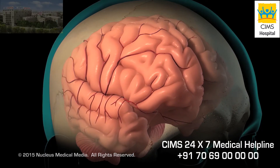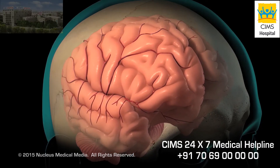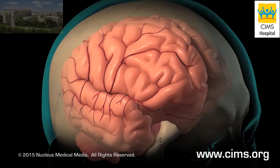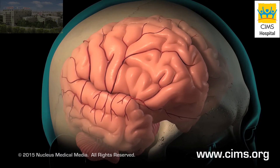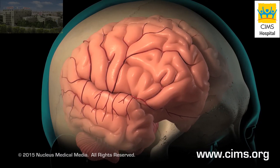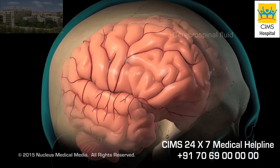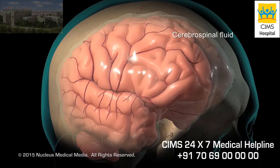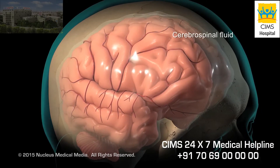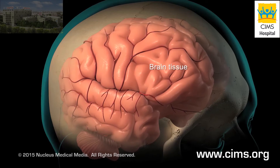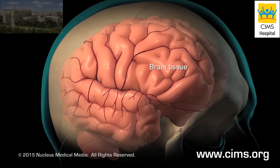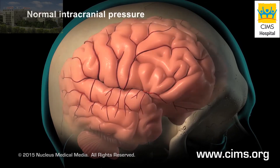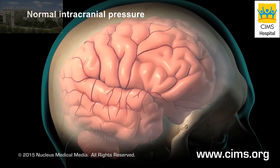Inside your skull, normal brain function requires a delicate balance of pressure between the blood and your blood vessels, the cerebrospinal fluid that surrounds your brain, and your brain tissue. This is called normal intracranial pressure.